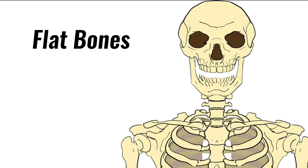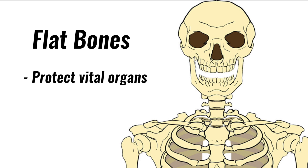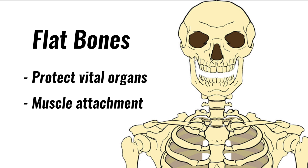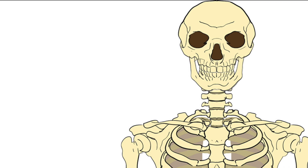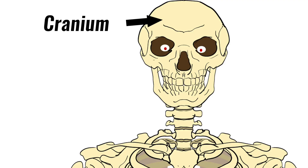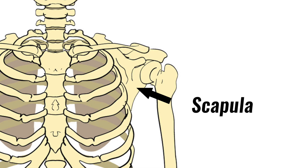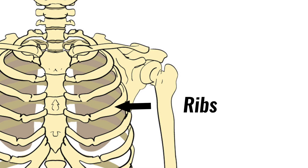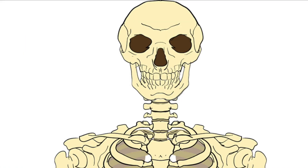Flat bones are strong flat plates of bone which protect vital organs and provide a large surface for muscles to attach. Examples of flat bones are the sternum or breastbone, the cranium in the skull and the scapula or shoulder blade. The ribs are also classified as flat bones.